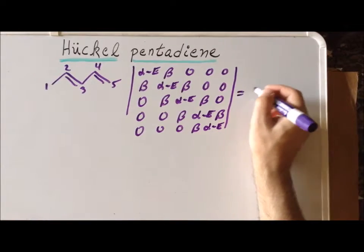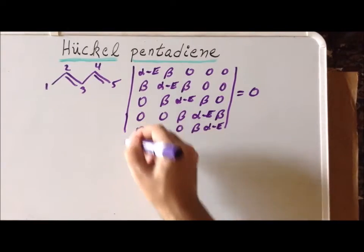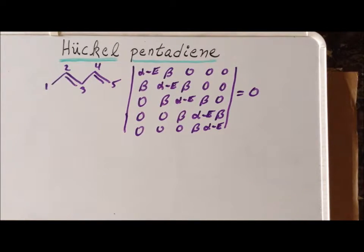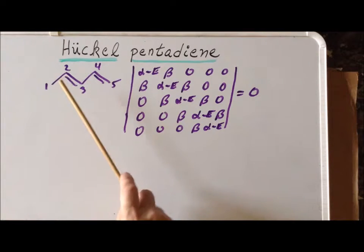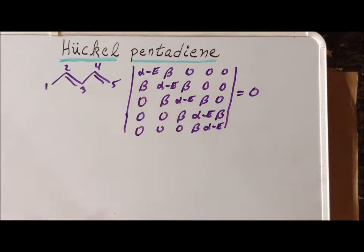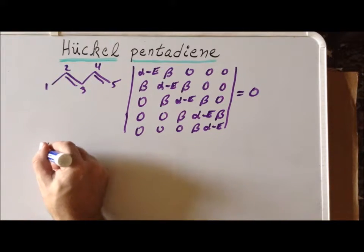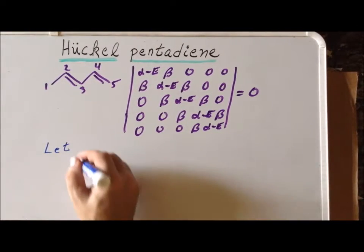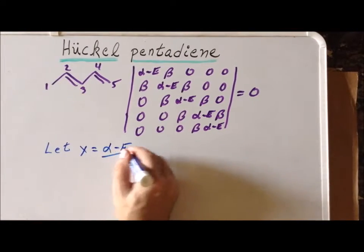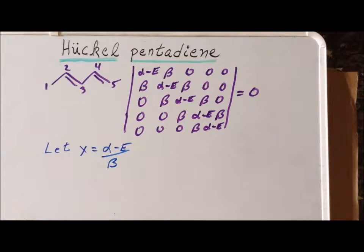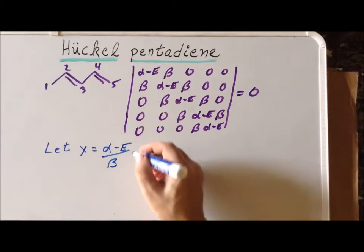This is set equal to zero to solve for the energies. The determinant has this particular structure because carbon one is only connected to carbon two, carbon two is connected to one and three, and so on. We use the assignment of letting x equal (alpha minus the energy) divided by beta, and then we can transform this equation into a more tidy form.